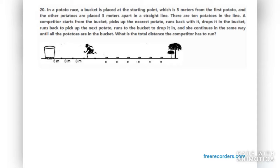The other potatoes are placed three meters apart in a straight line. There are ten potatoes in a line. A competitor starts from the bucket, picks up the nearest potato, runs back with it, drops it in the bucket, runs back to pick up the next potato, runs to the bucket to drop it in, and she continues in the same way until all potatoes are in the bucket.